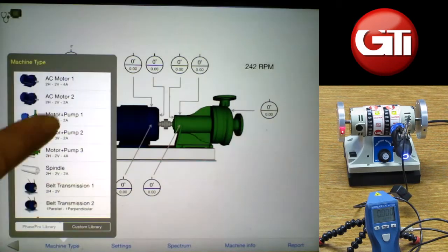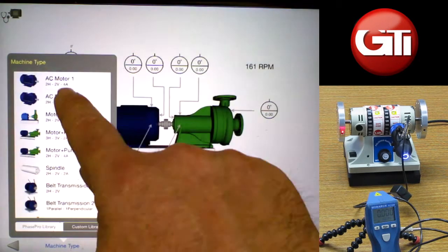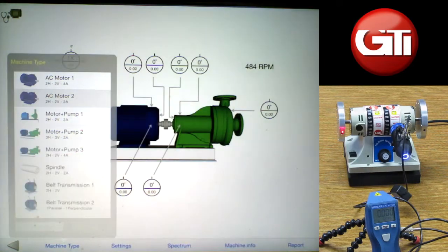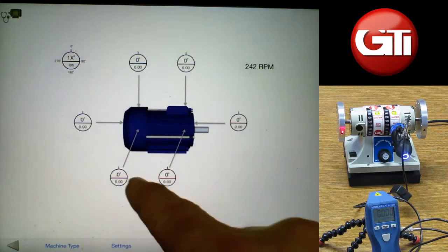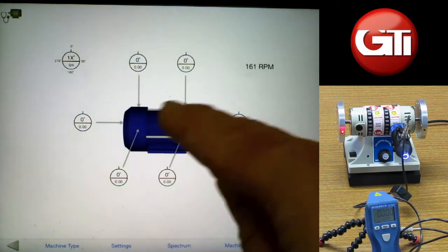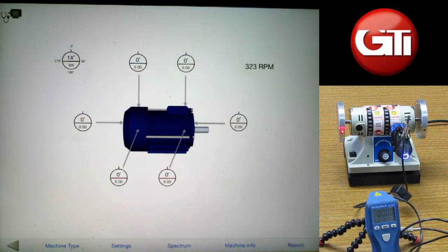So you can see we can simply just pick an AC motor like the one we're looking at here, pop it up, and it's going to show me where to move my probe for each position, which we're going to go ahead and do that.